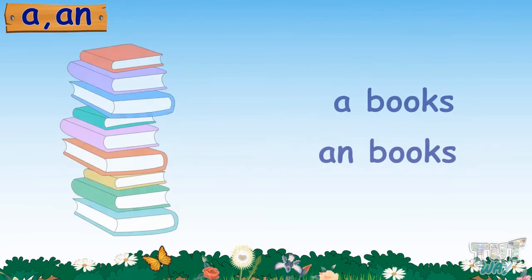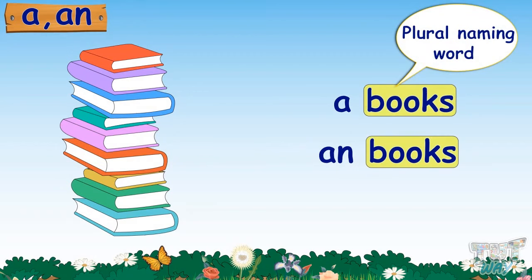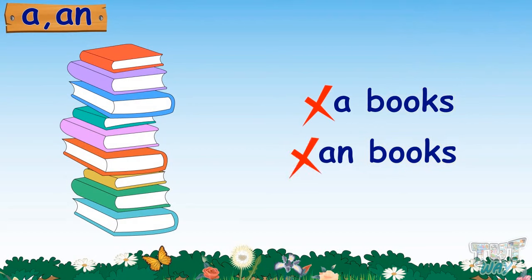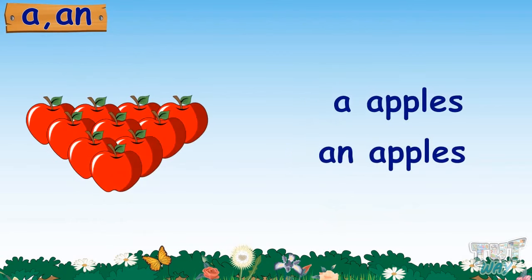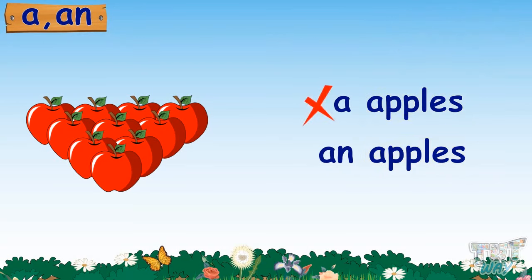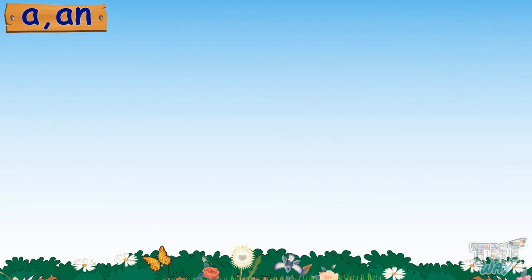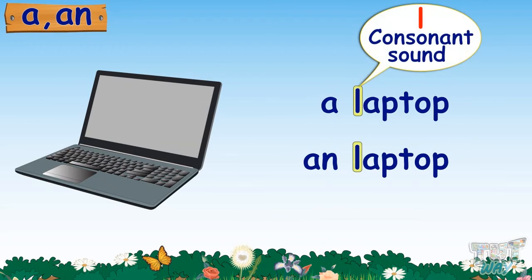Here we have the picture of some books — that is, more than one book. So books is a plural naming word; we will use neither 'a' nor 'an'. We will say: these are books. We have the picture of some apples. Apples is a plural naming word, so we cannot use 'a' or 'an' with apples. Here we have the picture of a laptop. It begins with a consonant sound, the sound of letter L, so we will use 'a': a laptop.